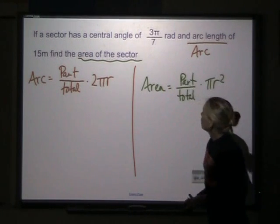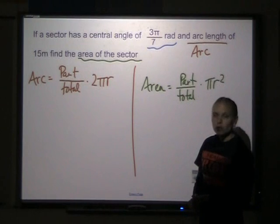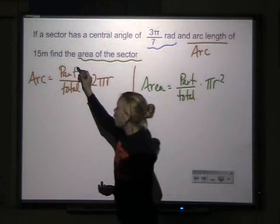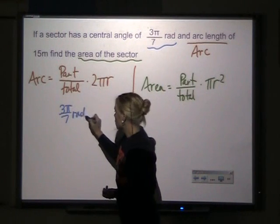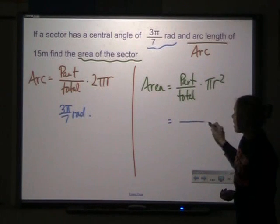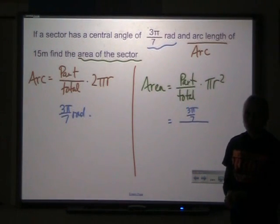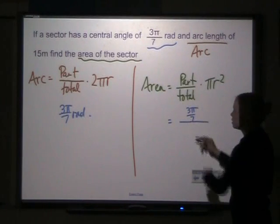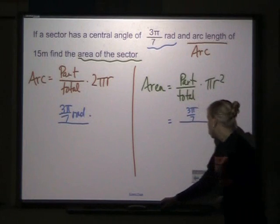I'm going to plug in the information I'm given. This is my central angle, 3π over 7 radians. So that's my part. It's my part over here too, because the sector is the same part of the circle. So since I'm talking about radians, my total has to be out of 2π.